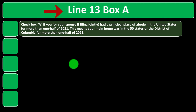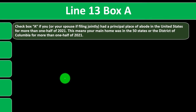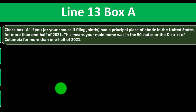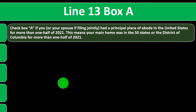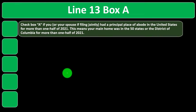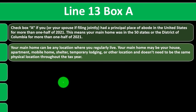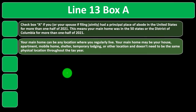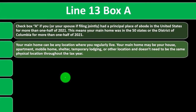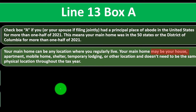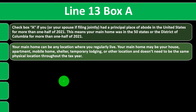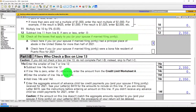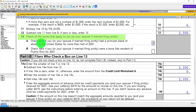Line 13, Box A: check Box A if you or your spouse, if filing jointly, had a principal place of abode in the United States for more than half of 2021. This means your main home was in the 50 states or the District of Columbia for more than half of 2021. This would apply to most people claiming the credit. Most people will basically have this one checked off, which means you're under the general rules.